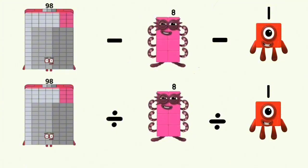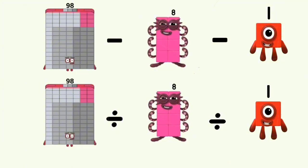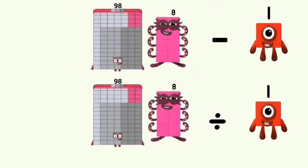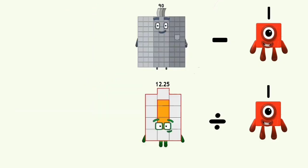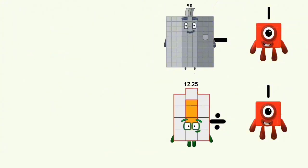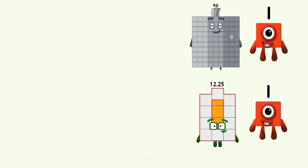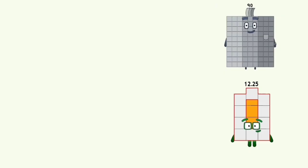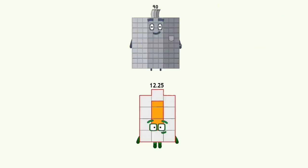98 minus 8 and divided by 8 equals 90 and 12.5. 90 minus 1 and 12.5 divided by 1 equals 90 and 12.5.